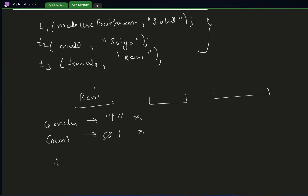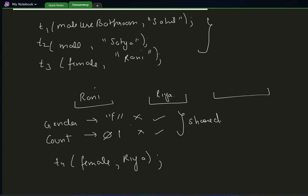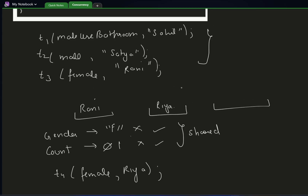Now imagine there is a T4 thread, which is also female — maybe Ria. It will again check the condition: it's a female and the count is also less than three, so Ria will enter the washroom. So we need to maintain two shared variables: gender and count, shared across all threads.